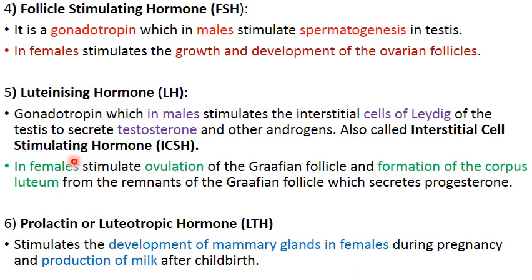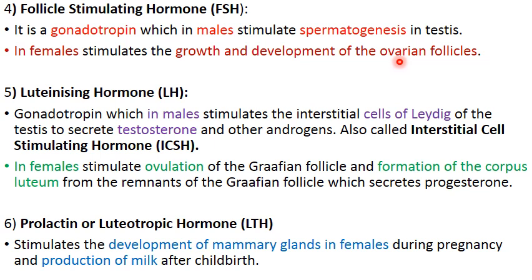Next is follicle stimulating hormone (FSH), a gonadotropin that influences the gonads with different functions in males and females. In males, FSH stimulates spermatogenesis in the seminiferous tubules of the testes. In females, it stimulates the growth and development of ovarian follicles — the structures in the ovary within which the egg grows.